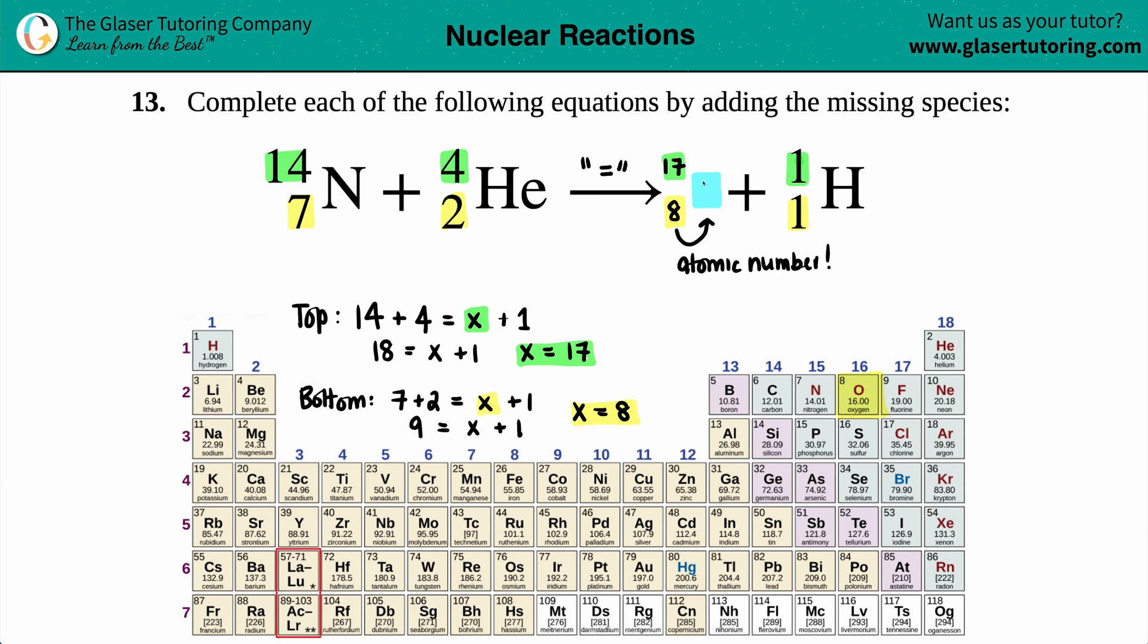So this one is just going to be O. That was an ugly O. That's better. And that's the answer. This is the missing link. So we got a 17 on the top, oxygen with an 8.